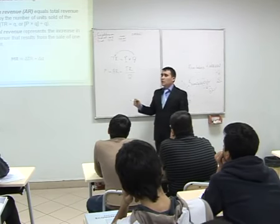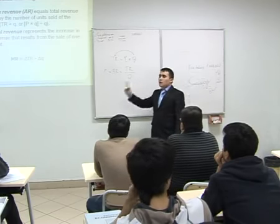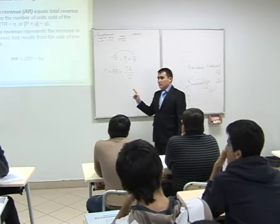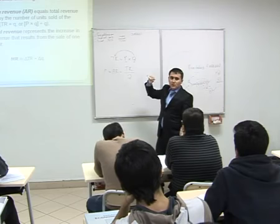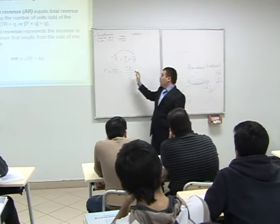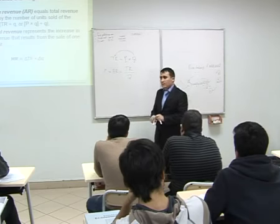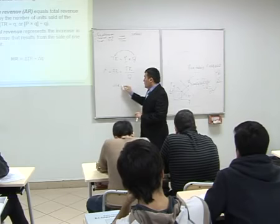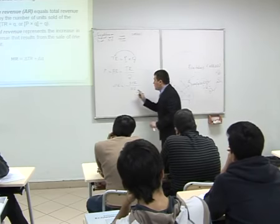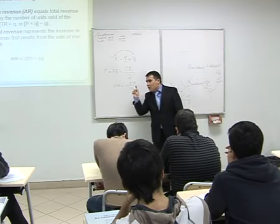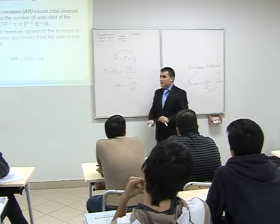In your textbook, for market size they use a capital letter Q; for an individual firm they use lowercase q. Your marginal revenue equals change in total revenue divided by change in quantity. If you increase production by one unit, how much does your total revenue go up? That is marginal revenue. If you decrease production by one unit, how much does total revenue go down? That is also marginal revenue.